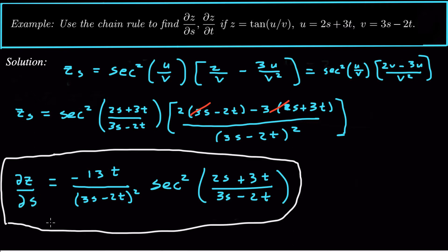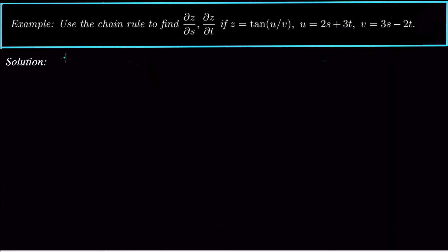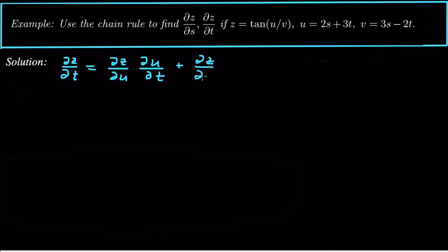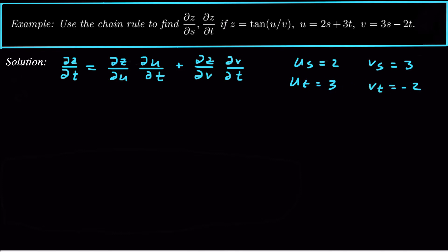Now for ∂z/∂t, it's very similar. The only things that change are the second terms — instead of u_s and v_s we use u_t and v_t. ∂z/∂u and ∂z/∂v stay the same. We already know u_s = 2, v_s = 3, u_t = 3, and v_t = −2. We already know what ∂z/∂u and ∂z/∂v are, so we'll go straight to z_t.